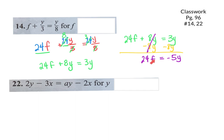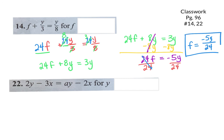I still don't have F by itself. What's happening between 24 and F? Multiplication. So how do I get rid of it? Division. I divide both sides by 24 — the 24s cancel leaving just F. On the right, the 5 cannot reduce with the 24, and I have a Y, so I leave it alone. F equals negative 5Y over 24.